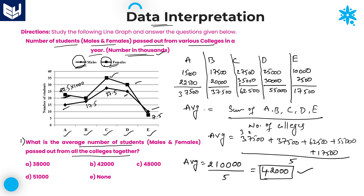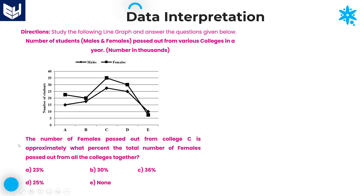42,000 is the required answer for this question, which is option B. Note that the question asks for both males and females together, not individually, so you need to be cautious about that particular statement.